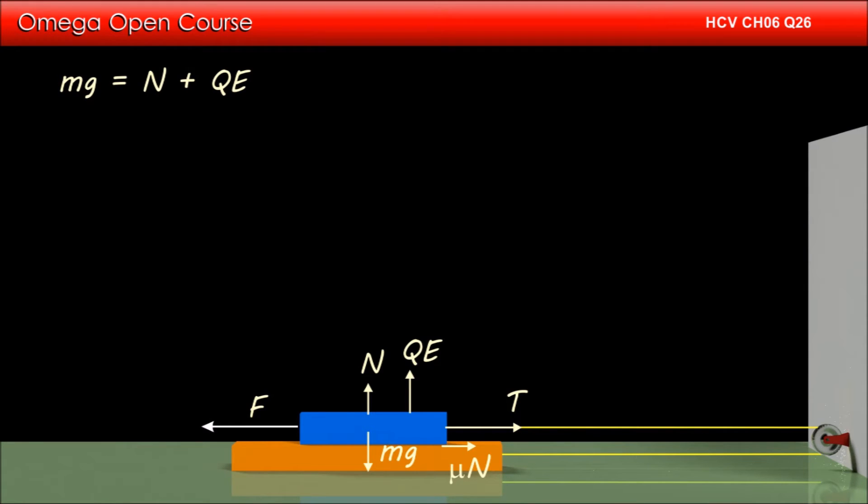we get mg = N + QE, which implies N = mg - QE. Balancing the forces in horizontal direction, we get F = T + μN.